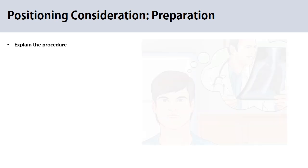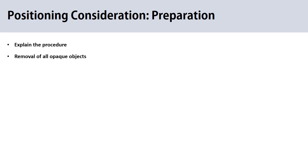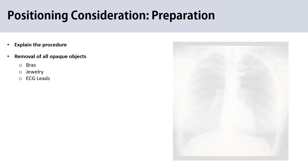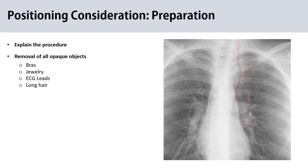First and foremost, before any radiology procedure we need to explain to the patient what we're going to do and how to perform the x-ray. Patients need to know the risk factors — you should explain about pregnancy conditions and so on. Patient preparation includes the removal of all opaque objects from the chest and neck region, like bras and jewelry. Sometimes patients come with chest leads — remove them if possible. Long hair may be visible as an artifact, especially when using a modern digital imaging system.